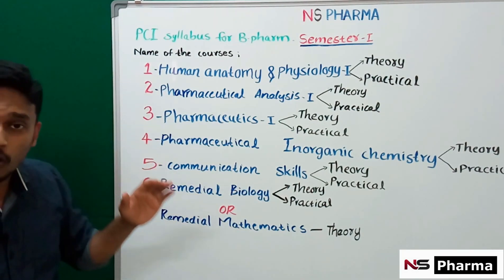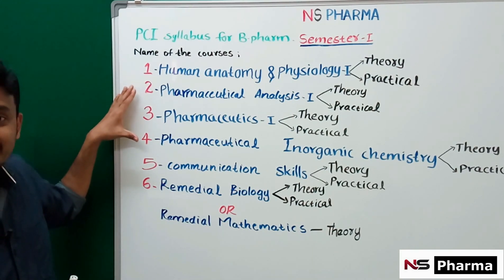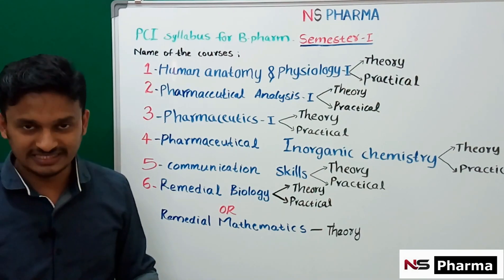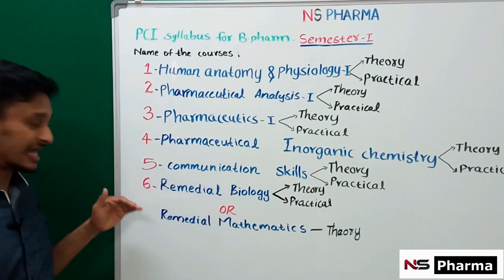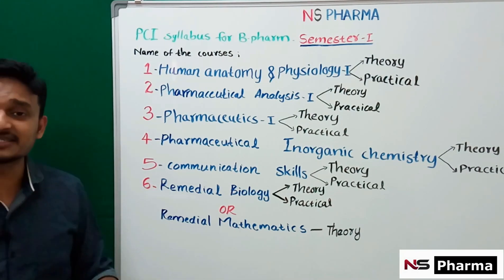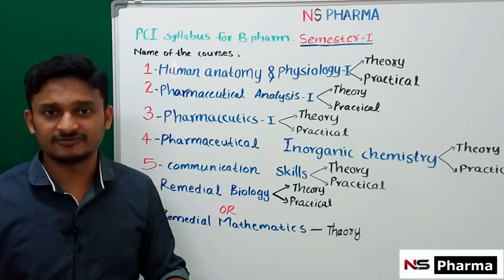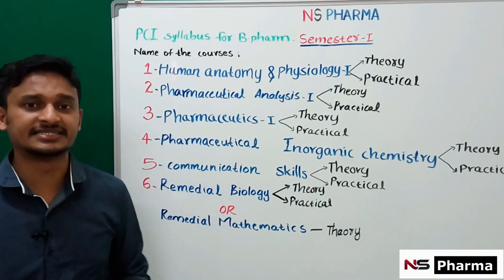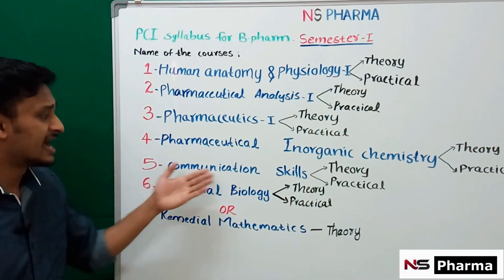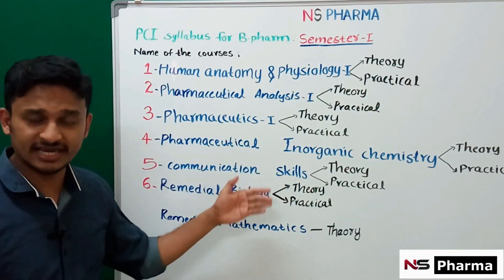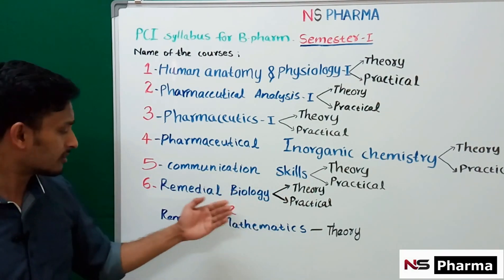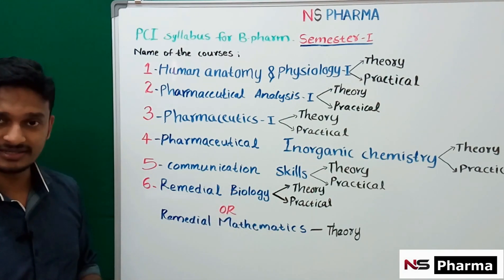These four subjects are called core subjects, and the exams for them are conducted by the corresponding universities. The fifth and sixth subjects are different — their exams are conducted by your college itself, and the college sends the marks to the university. The fifth subject is Communication Skills.